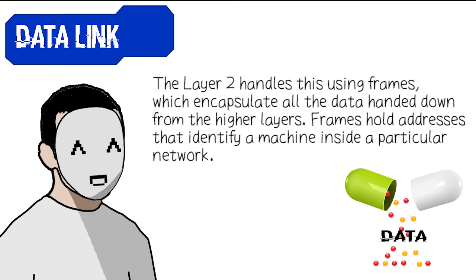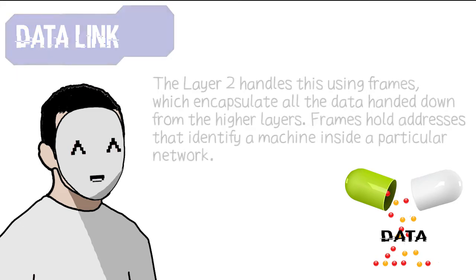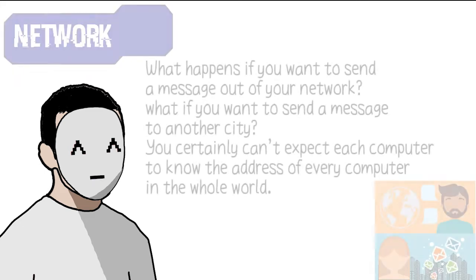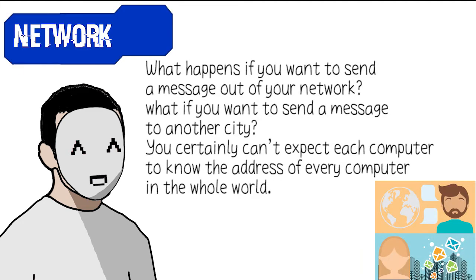Layer 2 handles this using frames, which encapsulate all data handed down from the higher layers. Frames hold addresses that identify a machine inside a particular network.